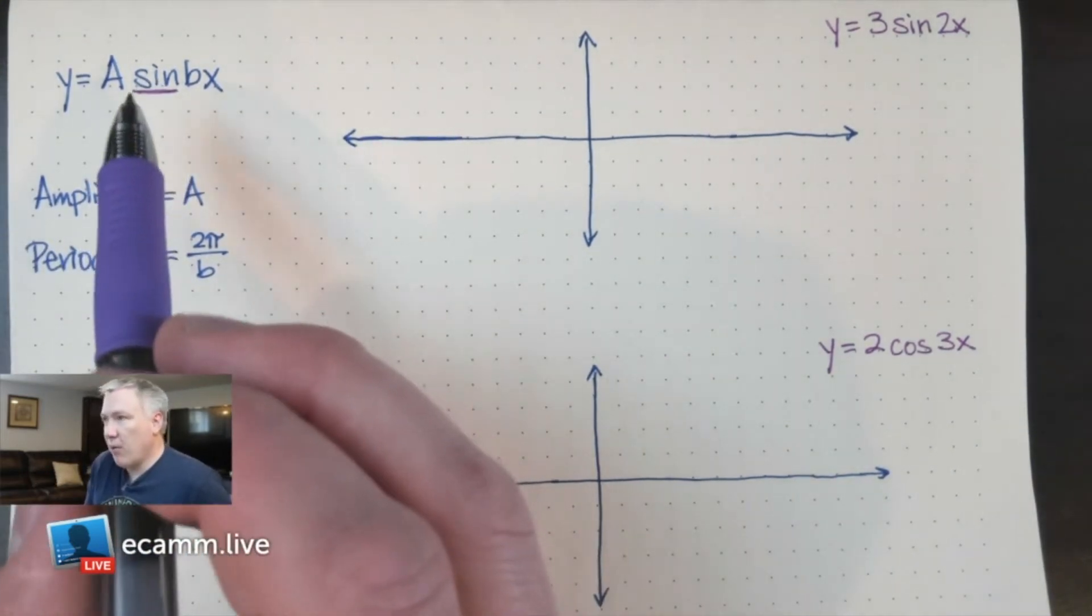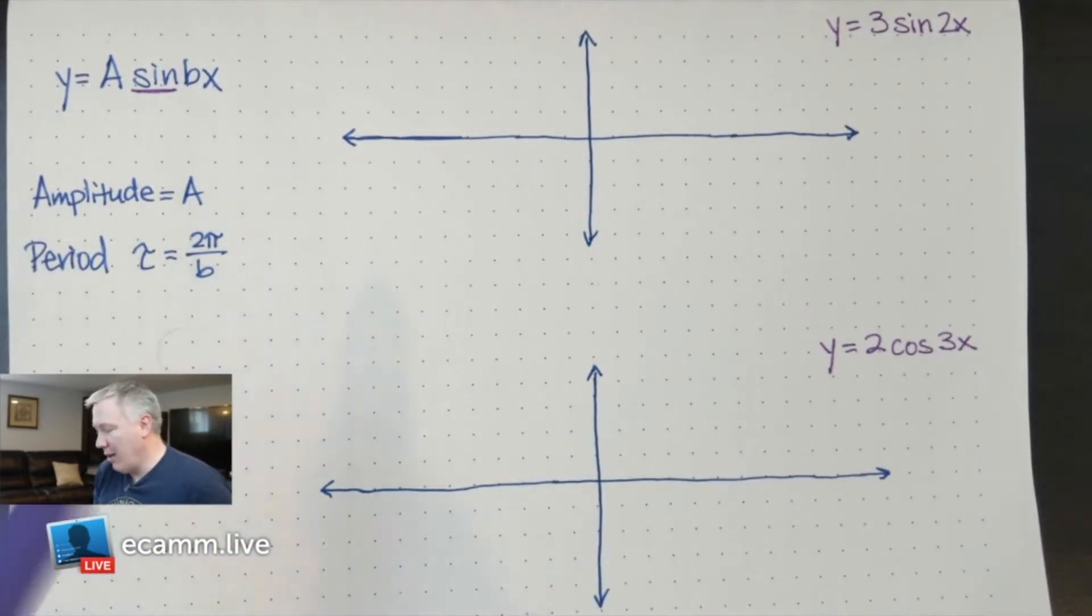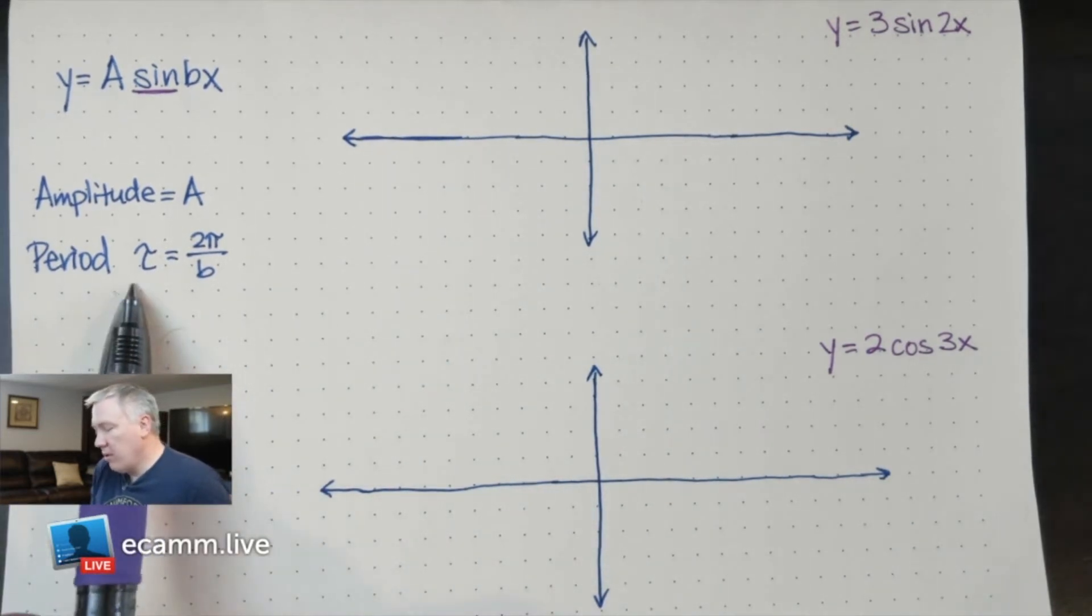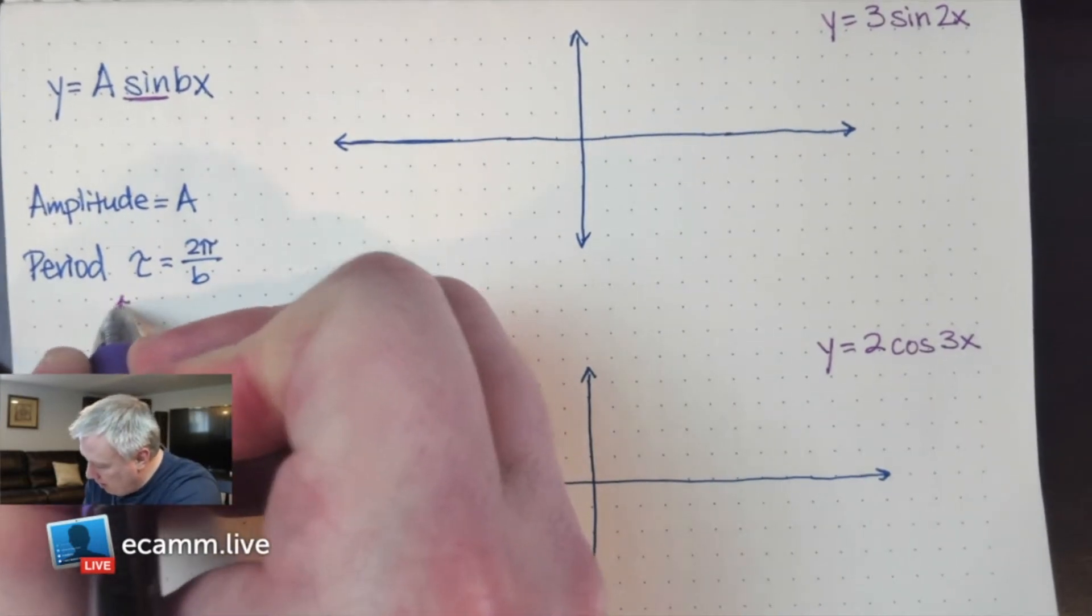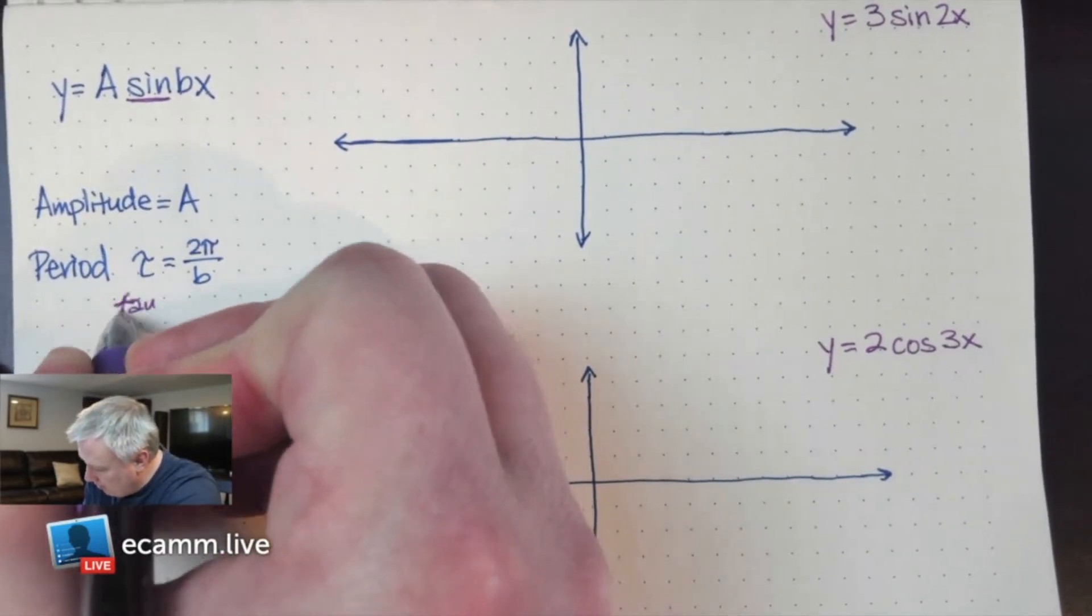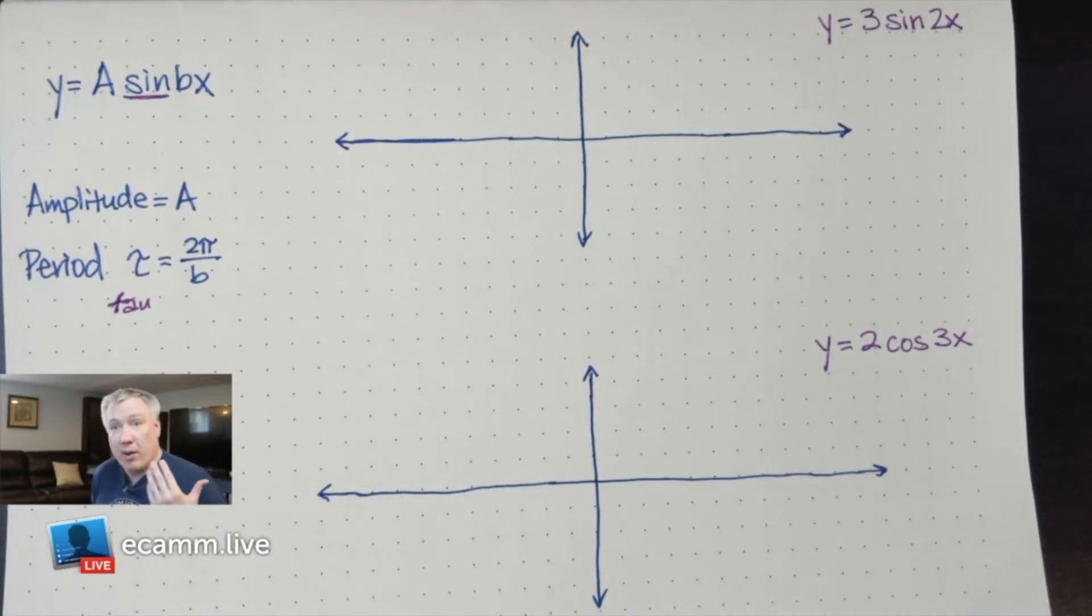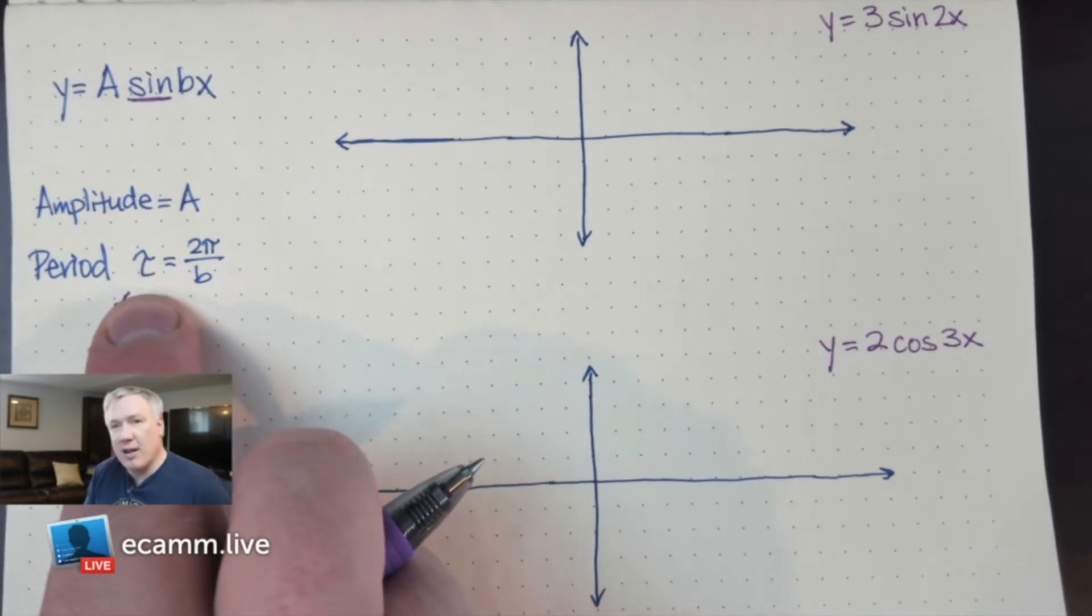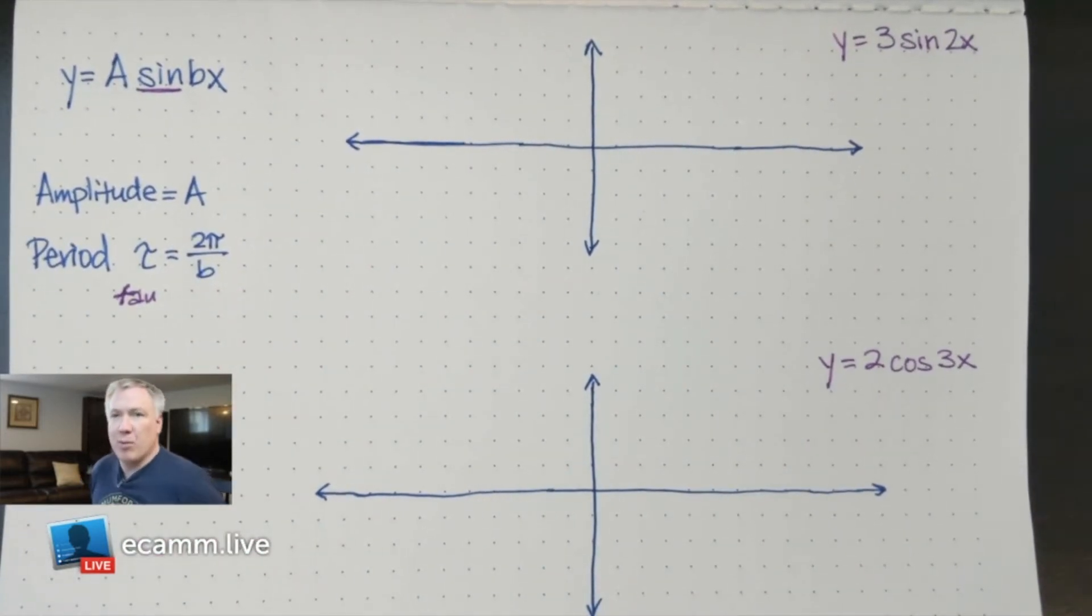Next, in this formula, the amplitude is just simply given by whatever number a is. So the amplitude is A. The period, and I'm using this Greek letter tau, T-A-U, is used to represent what the period is. And that is 2π divided by whatever number b is.